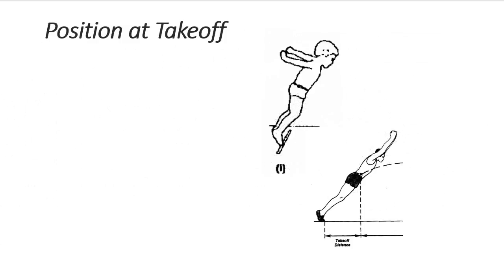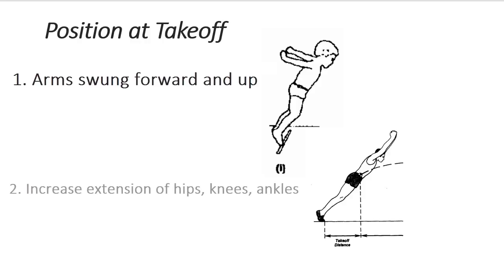There are two obvious ways the position shown here could be modified to increase takeoff distance. The arms could be swung forward and up so that they would be horizontal and forward of the shoulders at takeoff, and the extension of the hip, knee, and ankle joints could be increased.